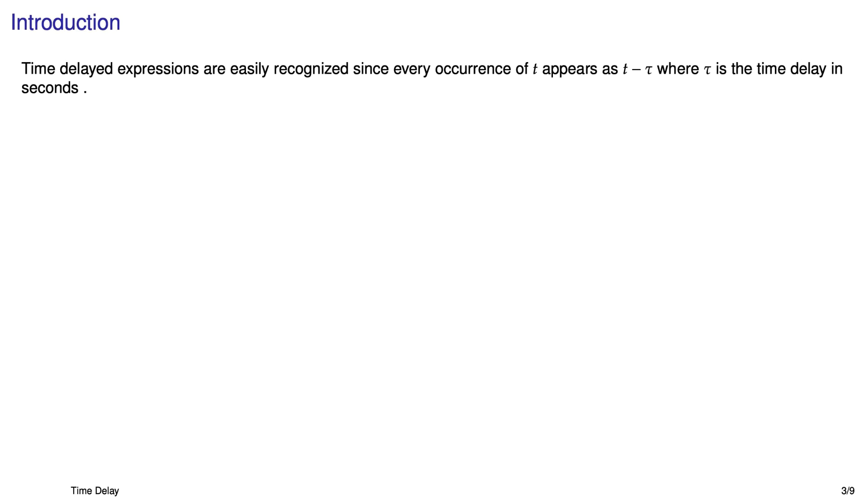It's actually pretty easy to recognize a time delayed function. If you're staring at some function of t and everywhere where you would normally see a t it's replaced by t minus tau, where tau is some number of 5, 7, etc., which represents the time delay, then you've got a time delayed function.